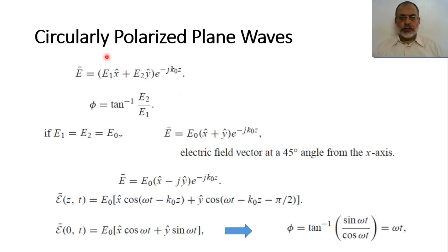In the previous examples, we assumed that the electric field is oriented in the X direction. So, as long as the wave is propagating, the direction of the electric field would be in the X direction. This is known as a linearly polarized wave.